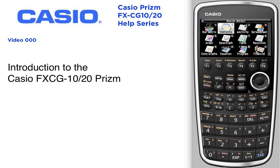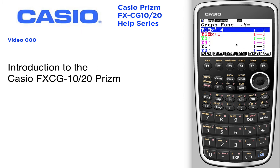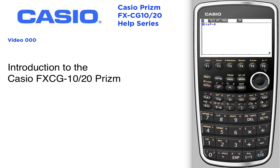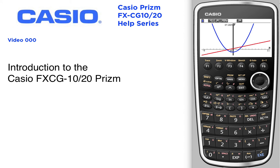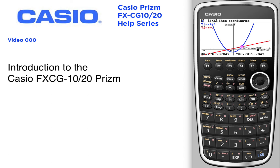You can also do graphing in color. We've got two functions selected here — notice how quickly it draws. Using the plus and minus keys you can zoom in and out. Using the arrow keys you can move up and down and manipulate the window. Using graph solve you can do things like find the intersections for multiple intersection points, and you can also drop points of intersection onto the screen itself.